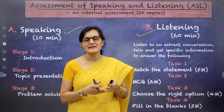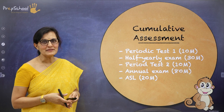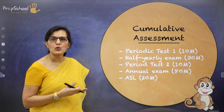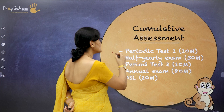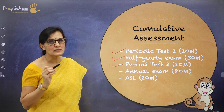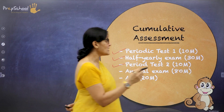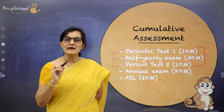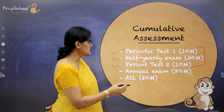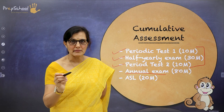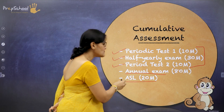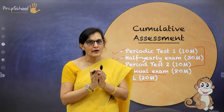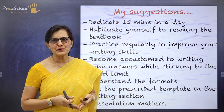This is the final part of the presentation. Your academic year will include periodic tests 1 and 2, along with a half-yearly exam — all school-based, conducted to help you prepare well for the final exam. At the end of the academic session you will write your annual exam for 80 marks, and your internal assessment marks will be added, giving you a total score out of 100.